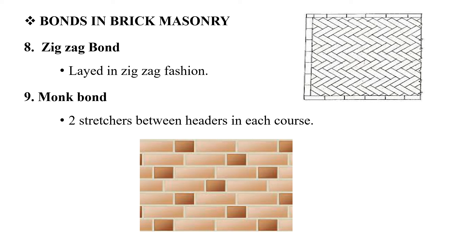When we use a zigzag bond, it is used for a one-brick-thick wall. There are different types such as the 6-sack bond. This bond creates a zigzag pattern across the wall surface.